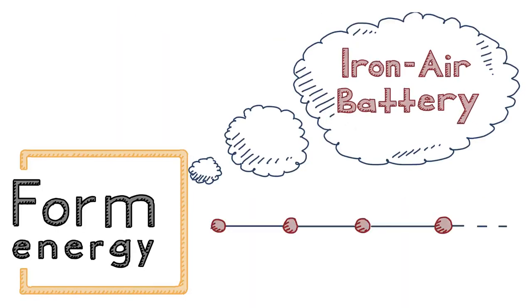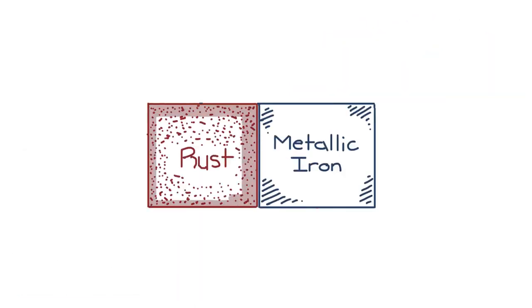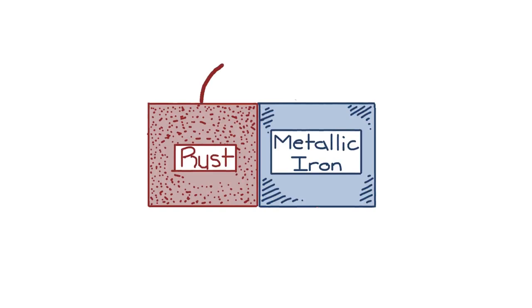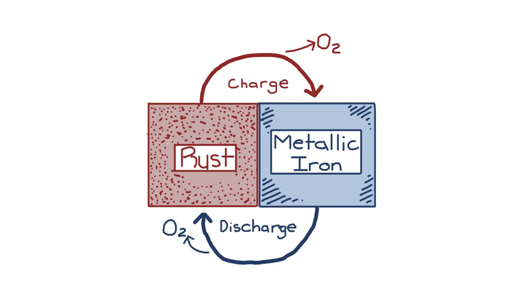Form is reinventing the Iron Air battery, optimized for multi-day energy storage. It's essentially a reversible rust battery that charges by using an electrical current to convert rust back into metallic iron while breathing out oxygen. On discharge, the battery breathes in oxygen from the air and converts metallic iron to rust.